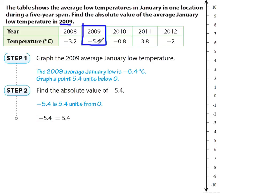In 2009, the average January low temperature is negative 5.4. Negative 5.4 is between negative five and negative six — and when you're talking about temperatures, being closer to zero would be warmer. It's just a little bit below negative 5.5, so we find a place between negative five and negative five and a half, and that's where we mark it. Step two says to find the absolute value of negative 5.4. Negative 5.4 is 5.4 units from zero on the number line. So the absolute value of negative 5.4 is positive 5.4.